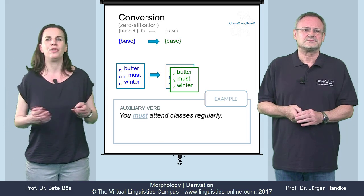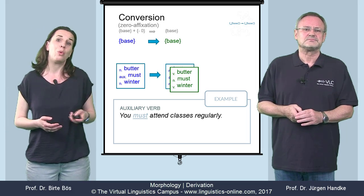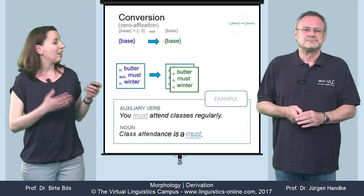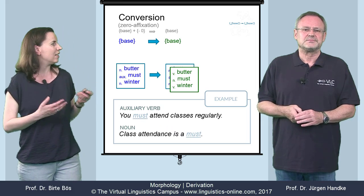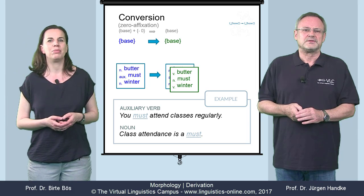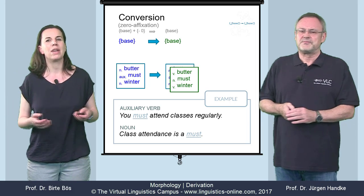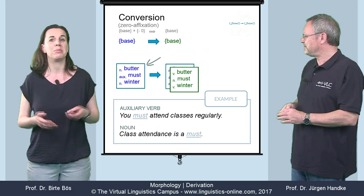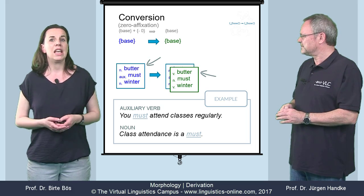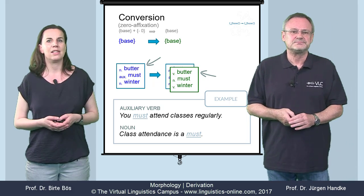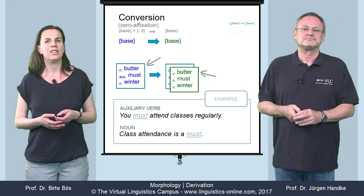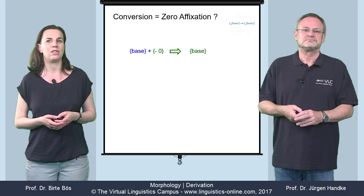Let's take the word must as an example. Must is normally an auxiliary verb, but it can also be used as a noun, as in the example: class attendance is a must. Conversion is a highly productive process in present-day English, especially with nouns and verbs like butter / to butter, but as we've just seen, it can also involve other word classes. Sometimes this process is alternatively referred to as zero-affixation.